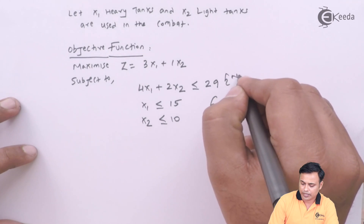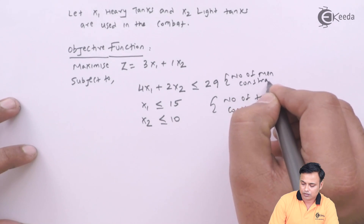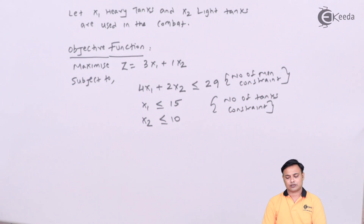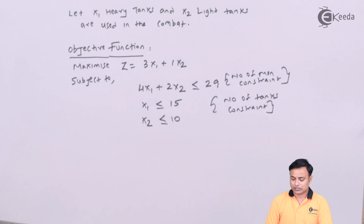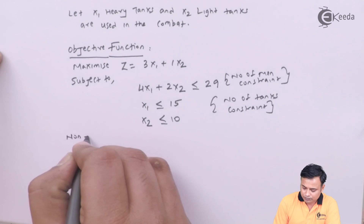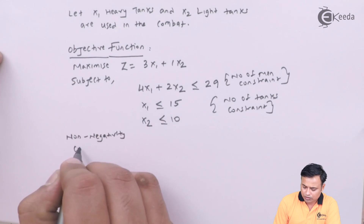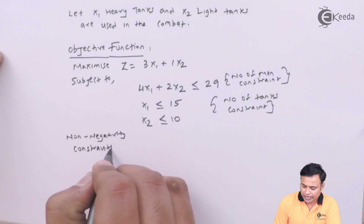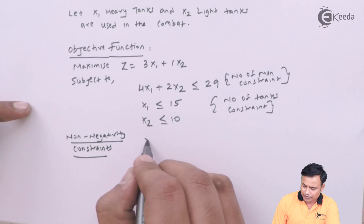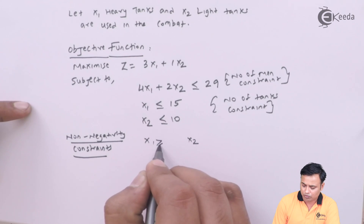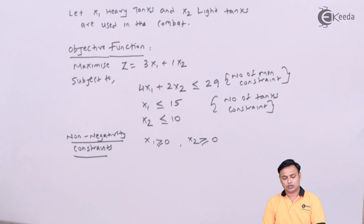These are the tank number constraints and the manpower constraint. Now we write the non-negativity constraints — remember, you are required to write these or you will lose marks in the exam. The non-negativity constraints are: x1 ≥ 0 and x2 ≥ 0.